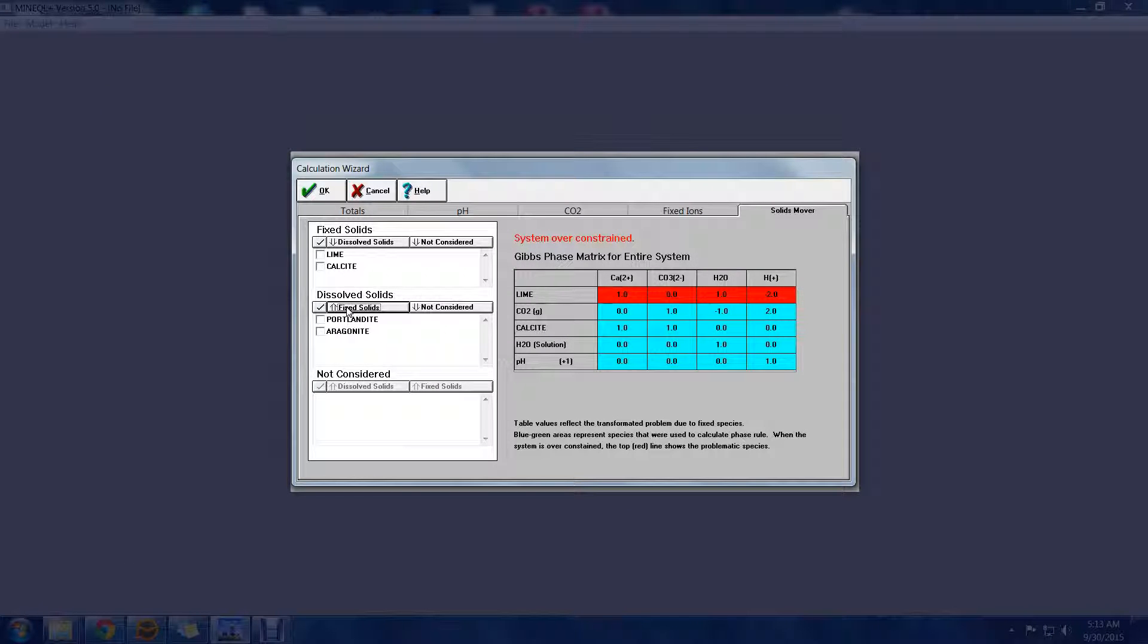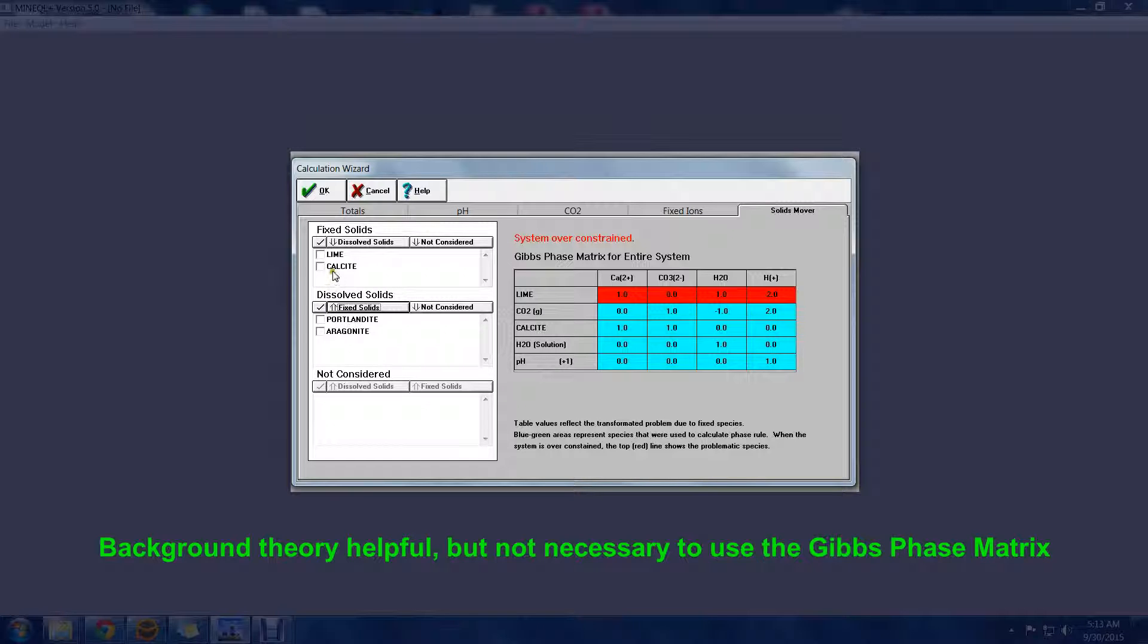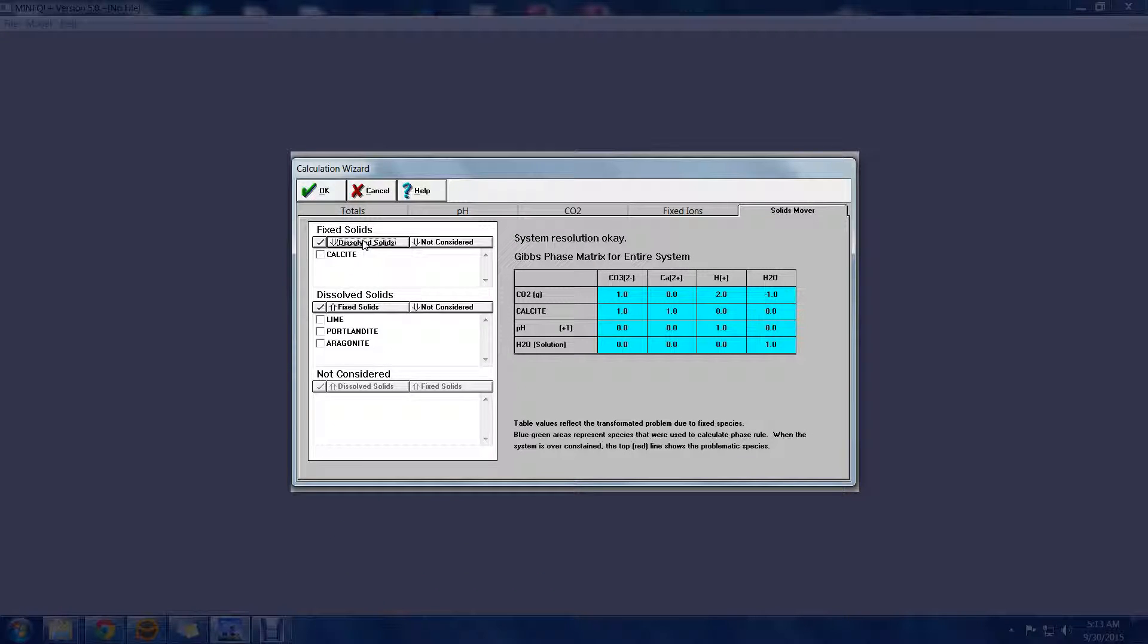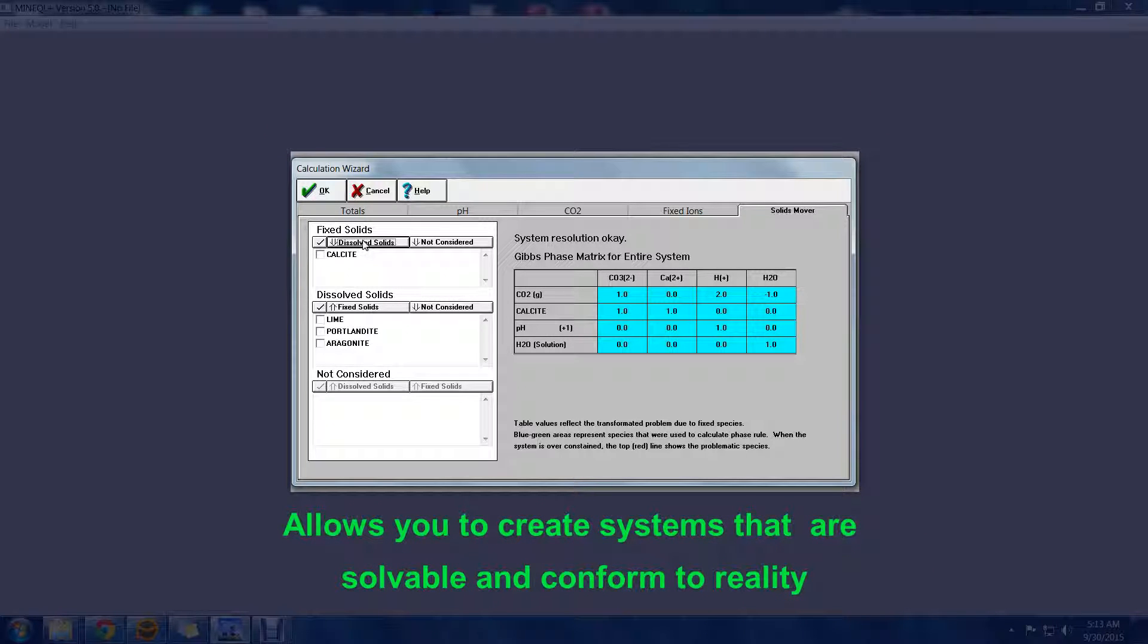While this information can be helpful in understanding what species are causing problems, the Gibbs phase matrix can be used in a more trial-and-error way to see what system scenarios are problematic. When controlling redox, solids, fixed ions, gases, CO2, or pH, the phase matrix provides a roadmap for creating systems that will complete their calculations and produce realistic results.